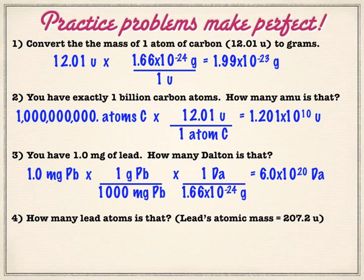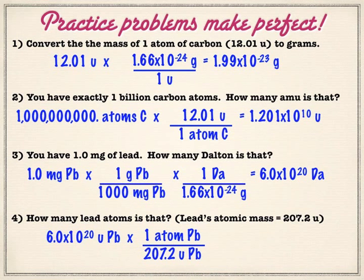Finally, how many lead atoms is that? Once we have that many Daltons, that many Daltons could be anything. But since it's lead, then I go back to the periodic table and I get the lead dependent value. It's 207.2. And that would change for anything. Go ahead and figure this out for any other element. In this case, it ends up being 2.9 times 10 to the 18th atoms.